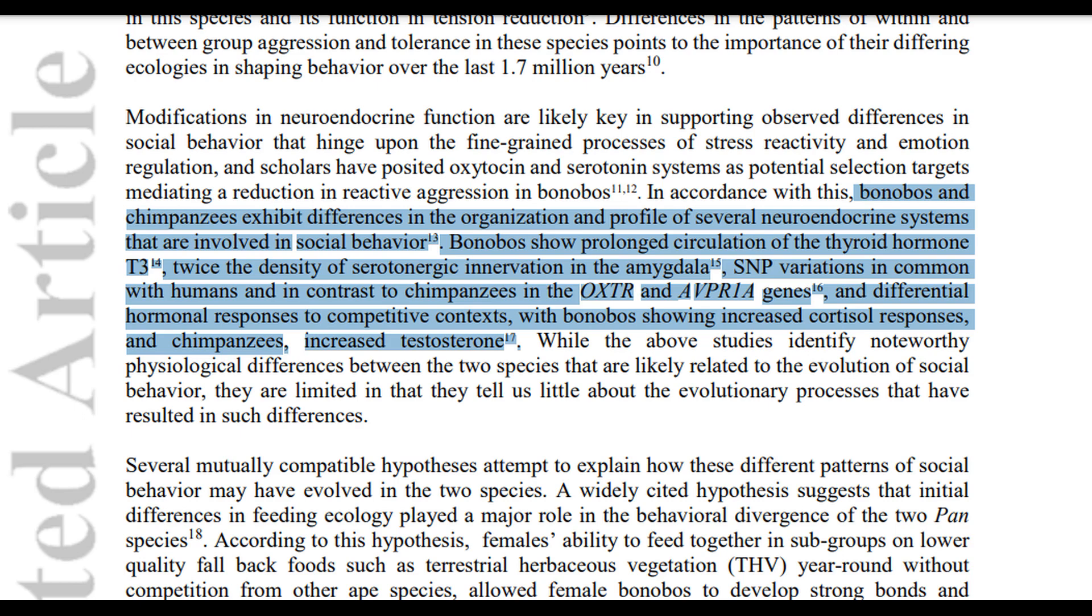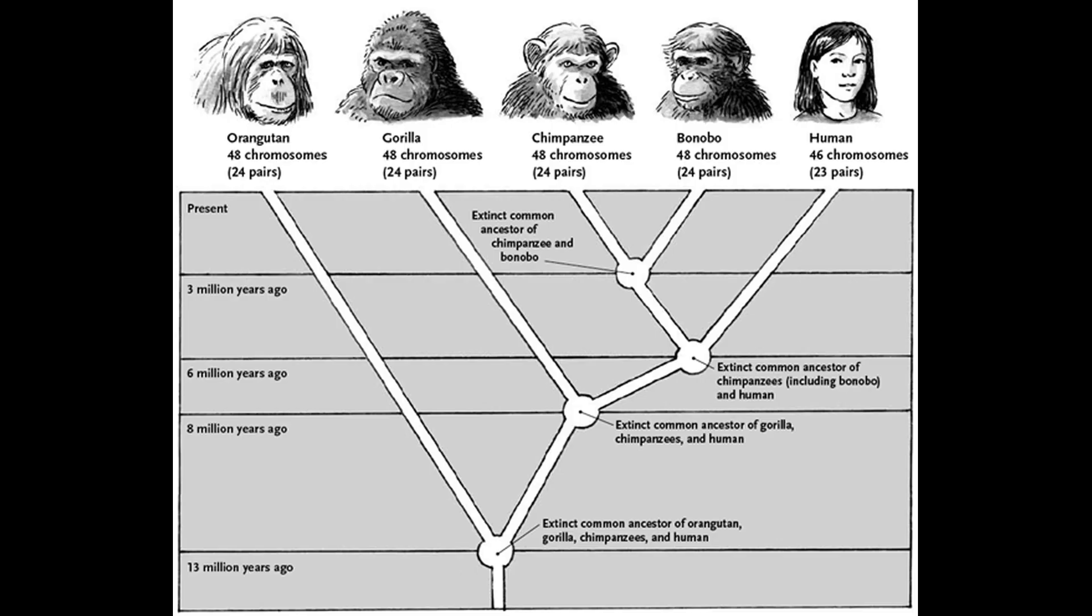We pinned our common ancestor with chimps and bonobos at about 6 million years ago, so it makes sense that we share over 96% sequence similarity with both species. Chimps and bonobos then diverged between 2 million and 860,000 years ago, possibly due to the Congo River. All we have are molecular estimates to go on, since fossils are so sparse, which we noted in the previous video.